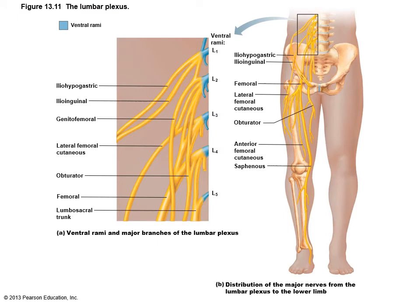The lumbar plexus is involved with innervation of the thigh, abdominal wall, and psoas muscle. The major nerves are the femoral and obturator. The femoral nerve innervates the quadricep group — the largest muscle group on the anterior surface of the leg — and when the knee-jerk reflex is performed, it tests the connection of the femoral nerve to the quadricep group.